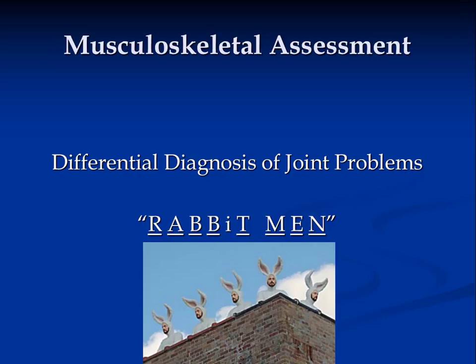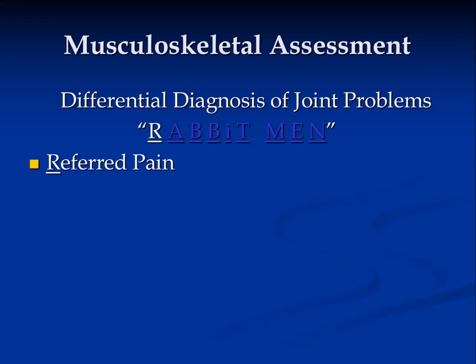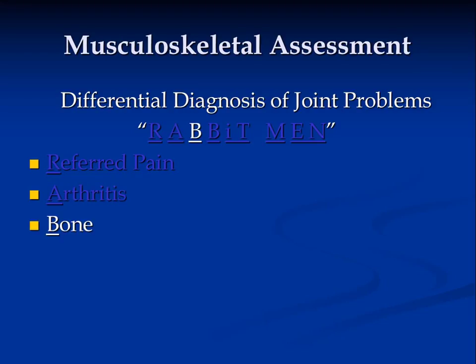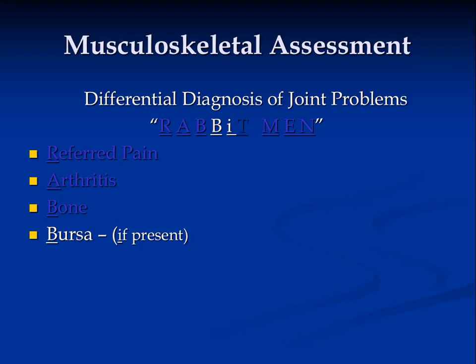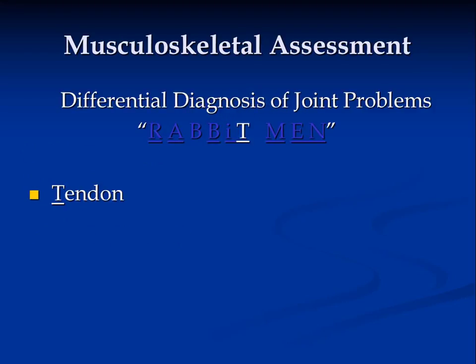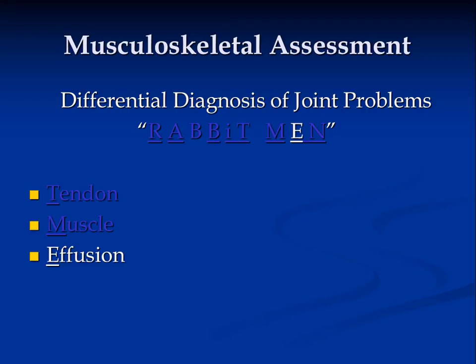In our differential diagnosis of joint problems, in every instance we're going to use the mnemonic RABBIT MEN: Referred pain, Arthritis, Bone, Bursa (if one is present), Tendon, muscle, Effusion, and Nerve. Using this mnemonic, we'll be able to identify what is causing the joint problem.